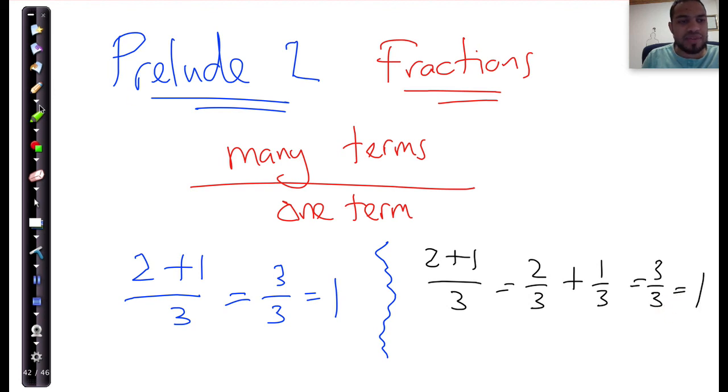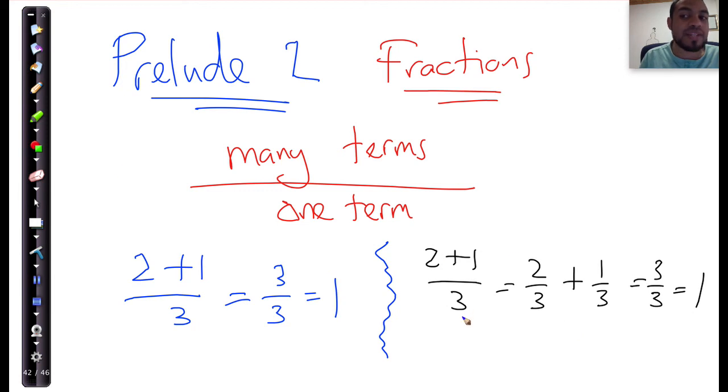Now, the point I'm making is that whenever you have something that is many terms over one term, many terms like 2 and 1 over one term, then I can always break it up into individual fractions and sum them up. So that's Prelude 2.